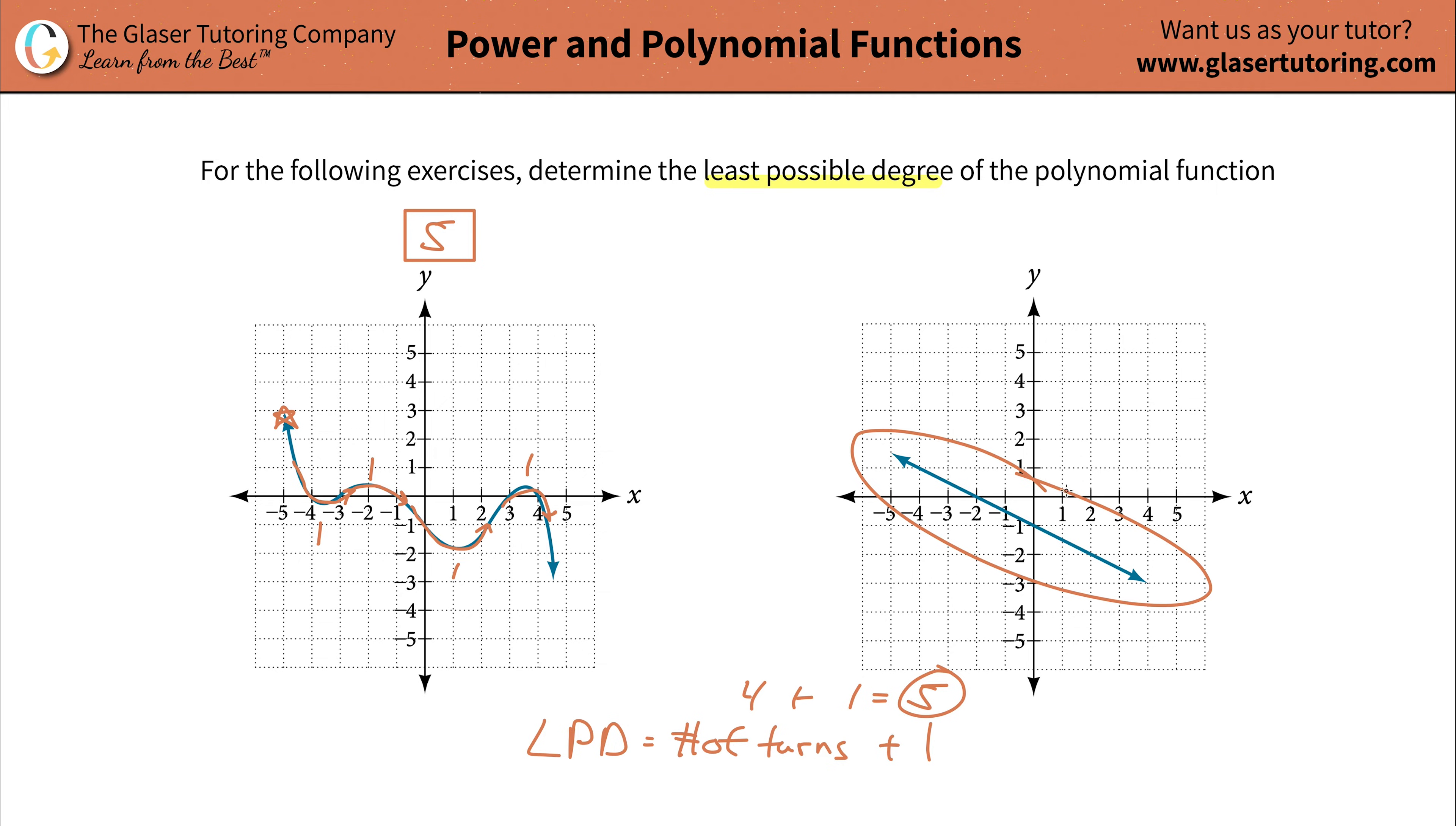Then when we take a look at this function on the right-hand side, let's just erase this for now. When we take a look at that function, do we see any turns? Not really, right? It's just a slide, basically. We don't see any turns. There's no hills or valleys.